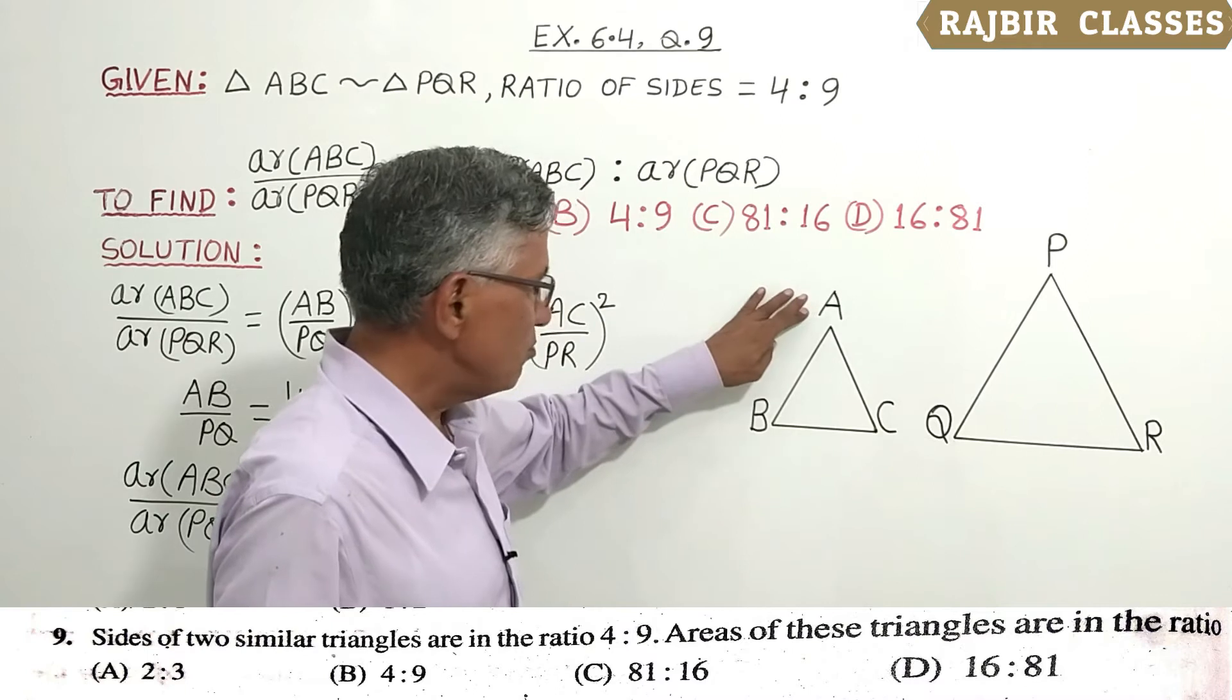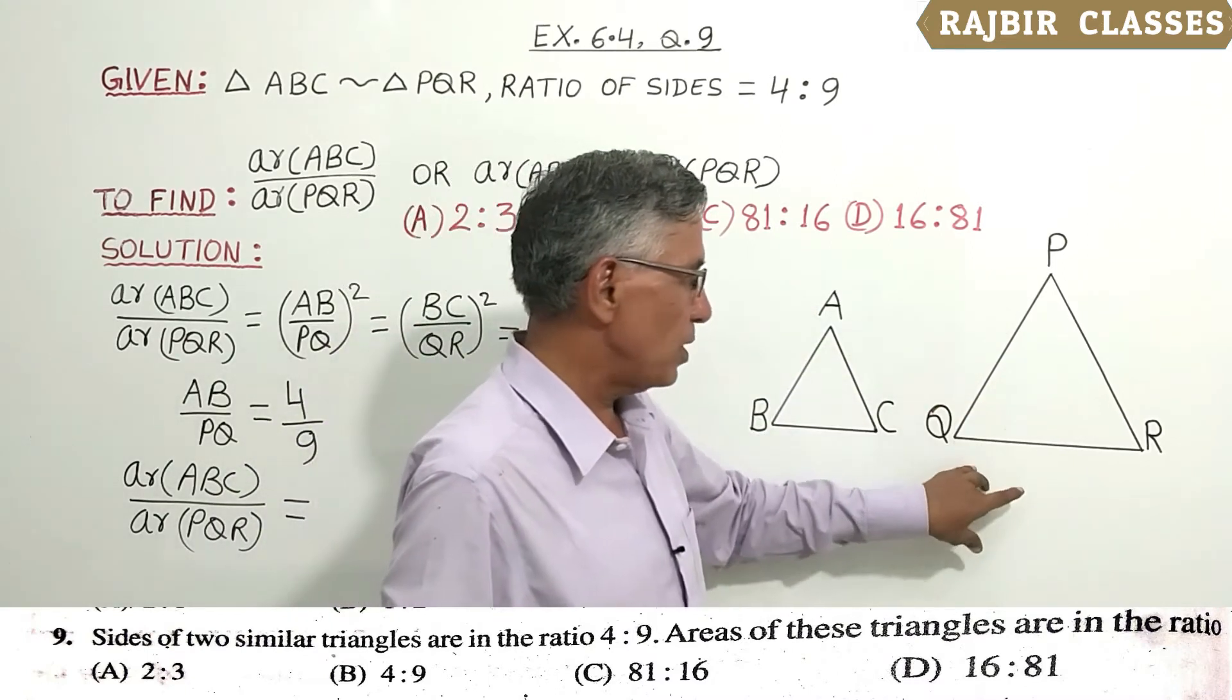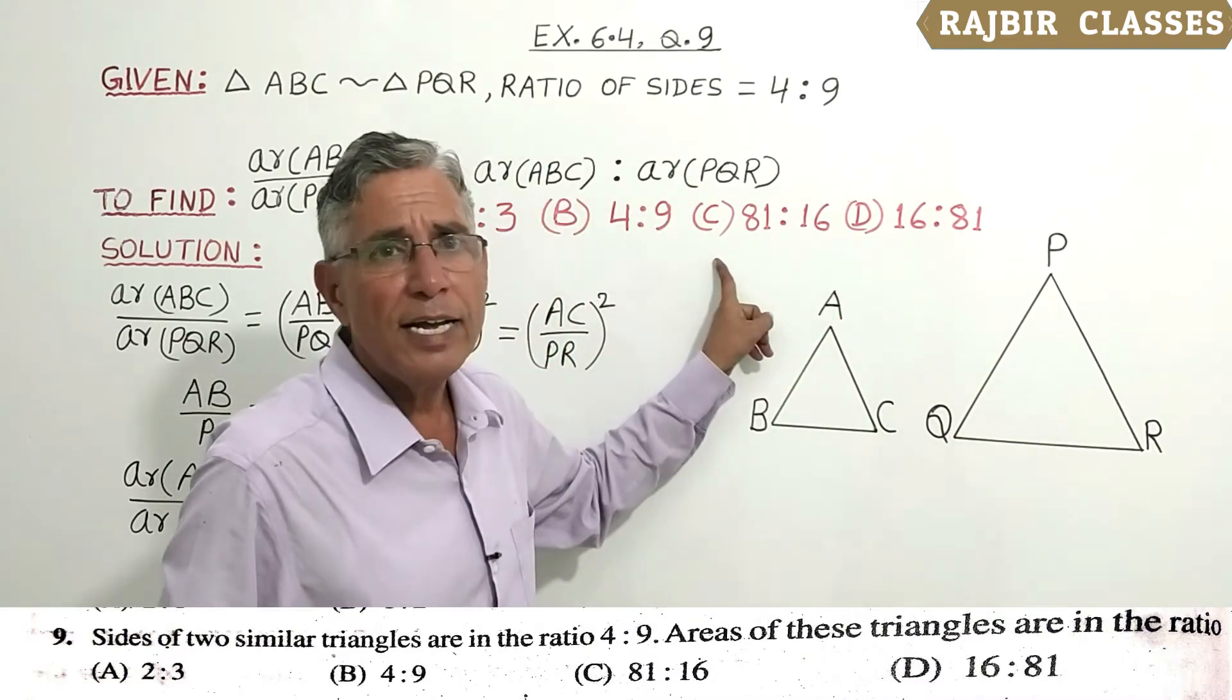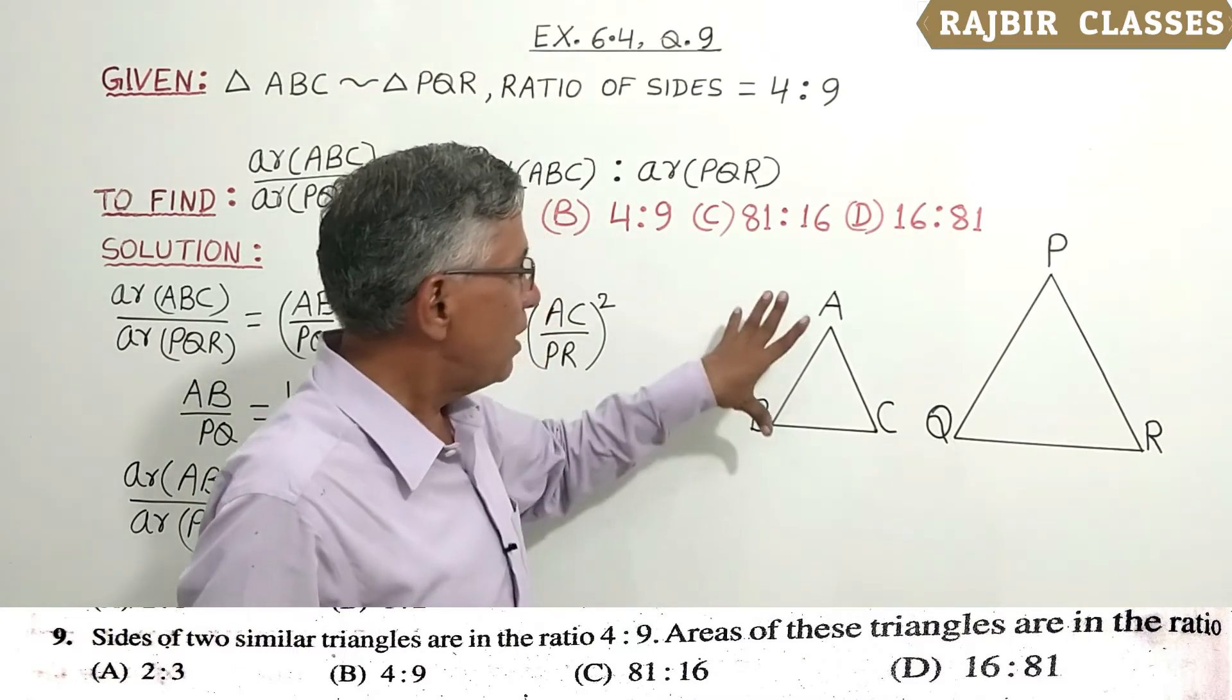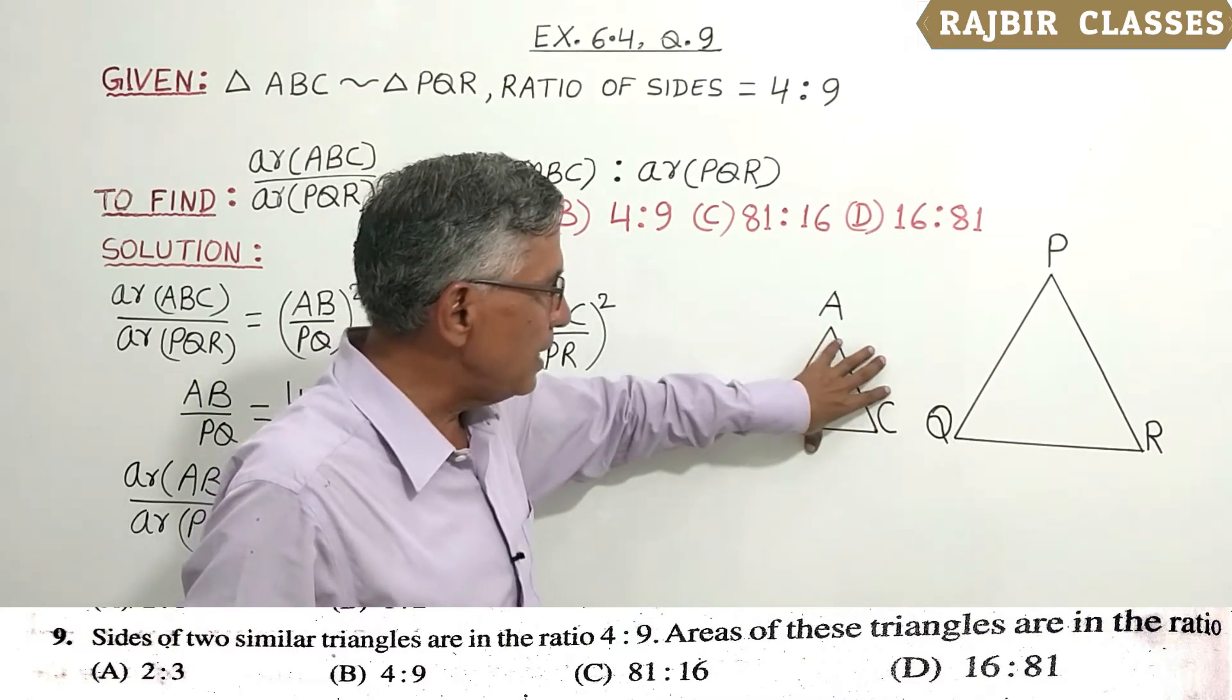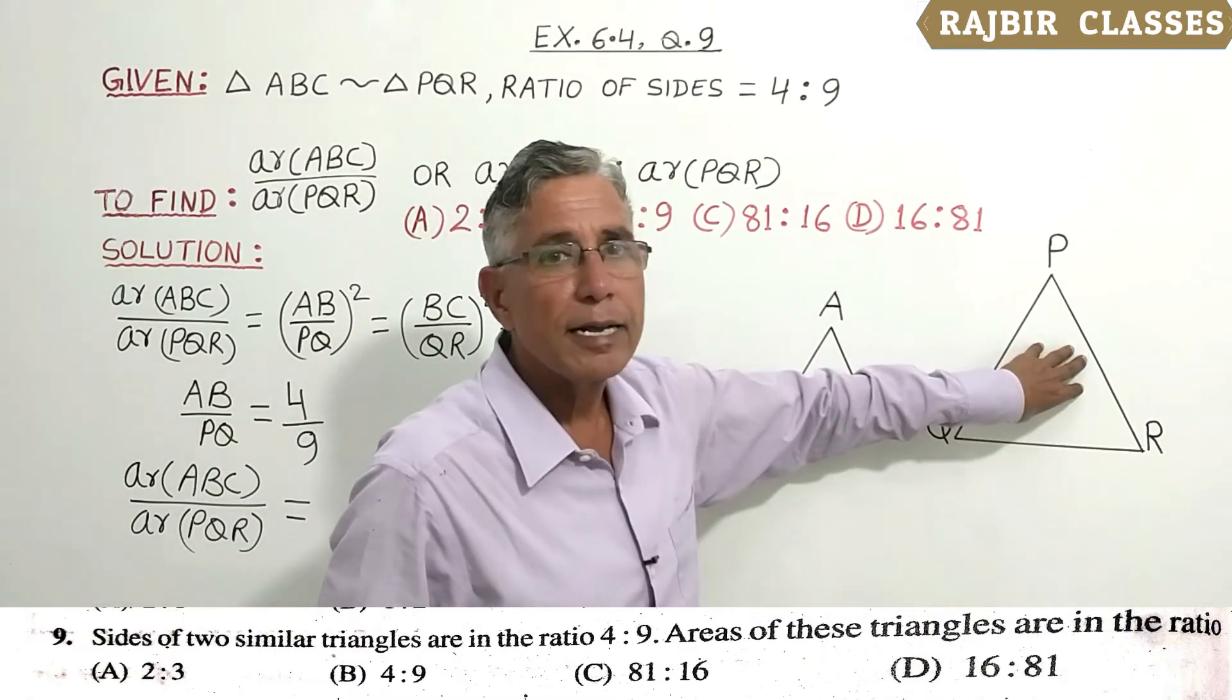So, this is the ratio of the two similar triangles, ABC and PQR. If you have a question of this section, you need to go to the direct answer. The direct answer: this is the ratio of the triangle, and this is the ratio of the triangle.